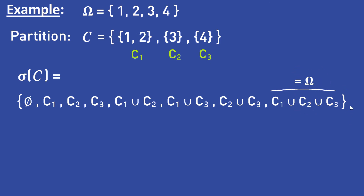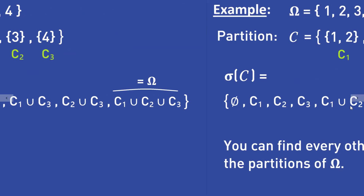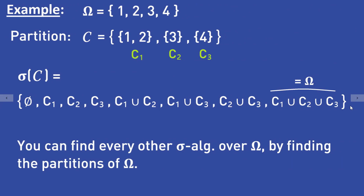In a similar manner you can find every other sigma algebra over the set omega — you write down a partition and then combine the partition elements to form the sigma algebra.